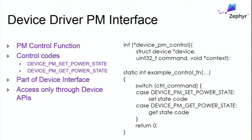This is how drivers implement this interface. They implement a set and get power state using a control function method. The APIs all go through the device management layer. The applications don't see this directly.